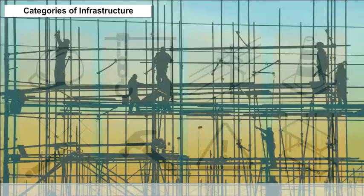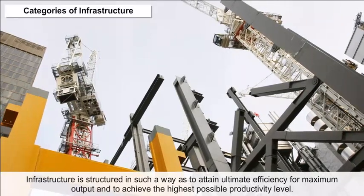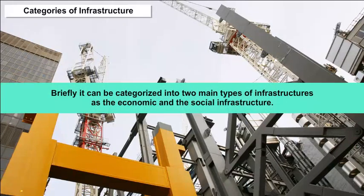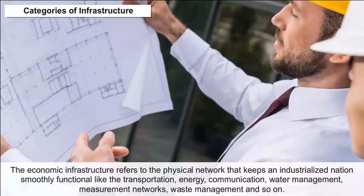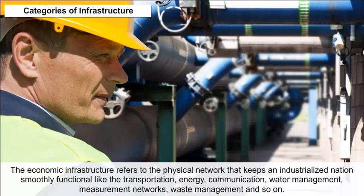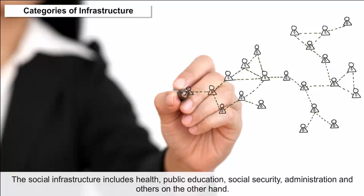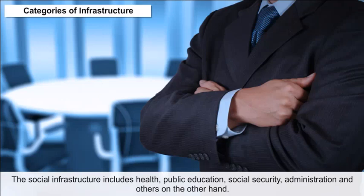Categories of Infrastructure. Infrastructure is structured to attain ultimate efficiency for maximum output and to achieve the highest possible productivity level. It can be categorized into two main types. The economic infrastructure refers to the physical network that keeps an industrialized nation functioning smoothly, like transportation, energy, communication, water management, measurement networks, and waste management. The social infrastructure includes health, public education, social security, and administration.